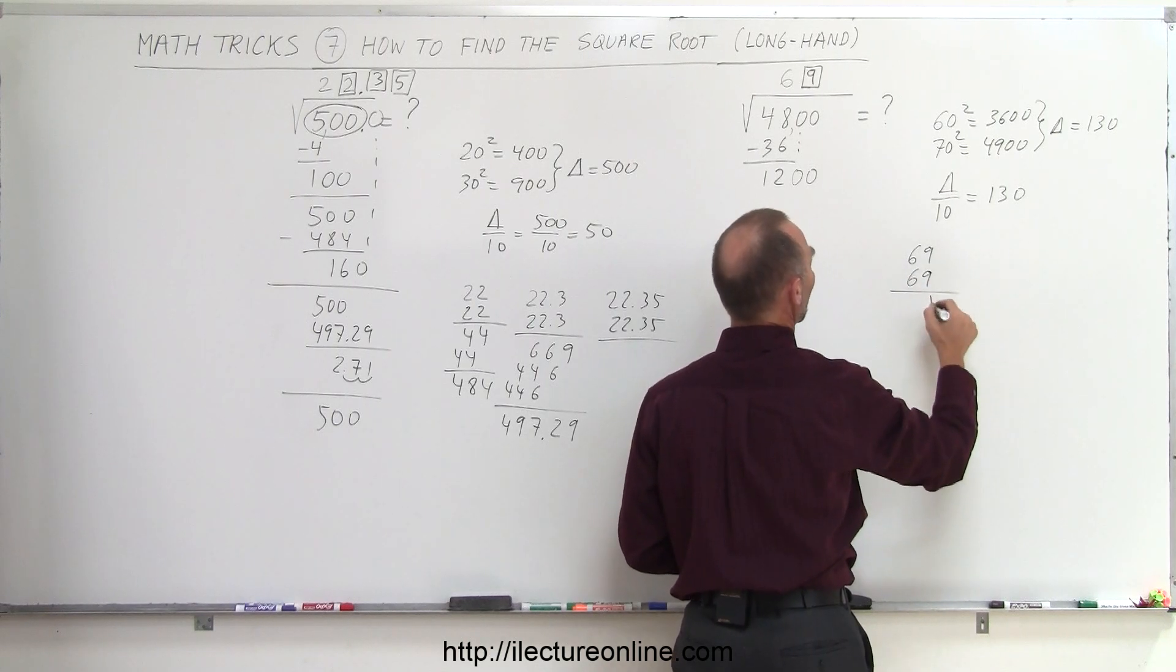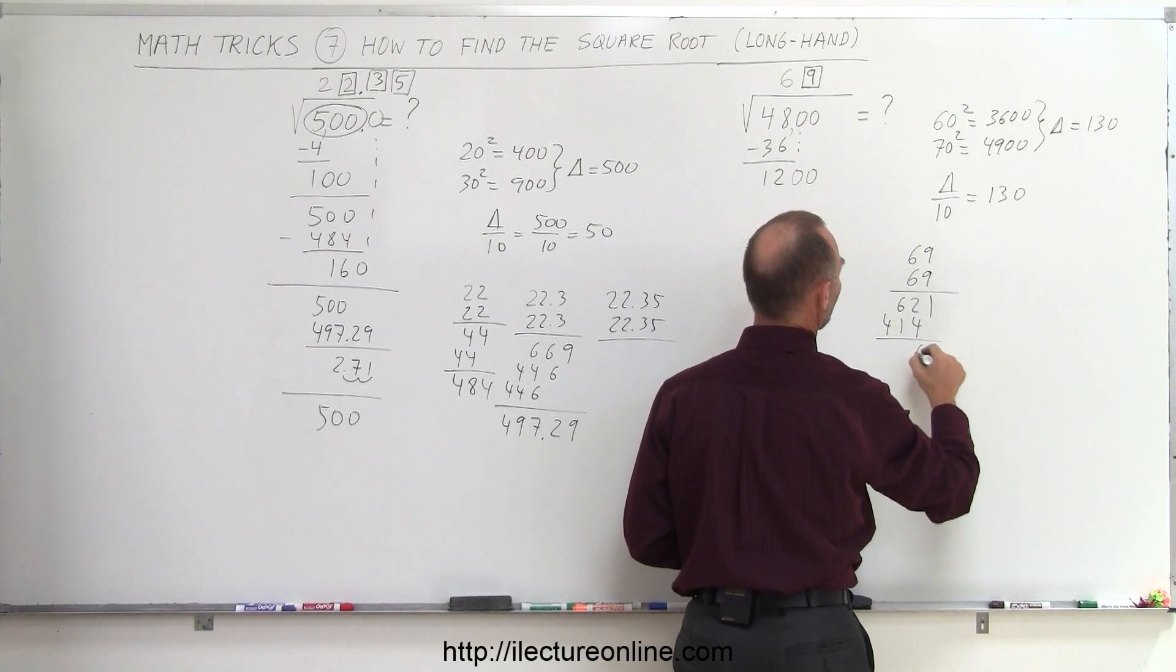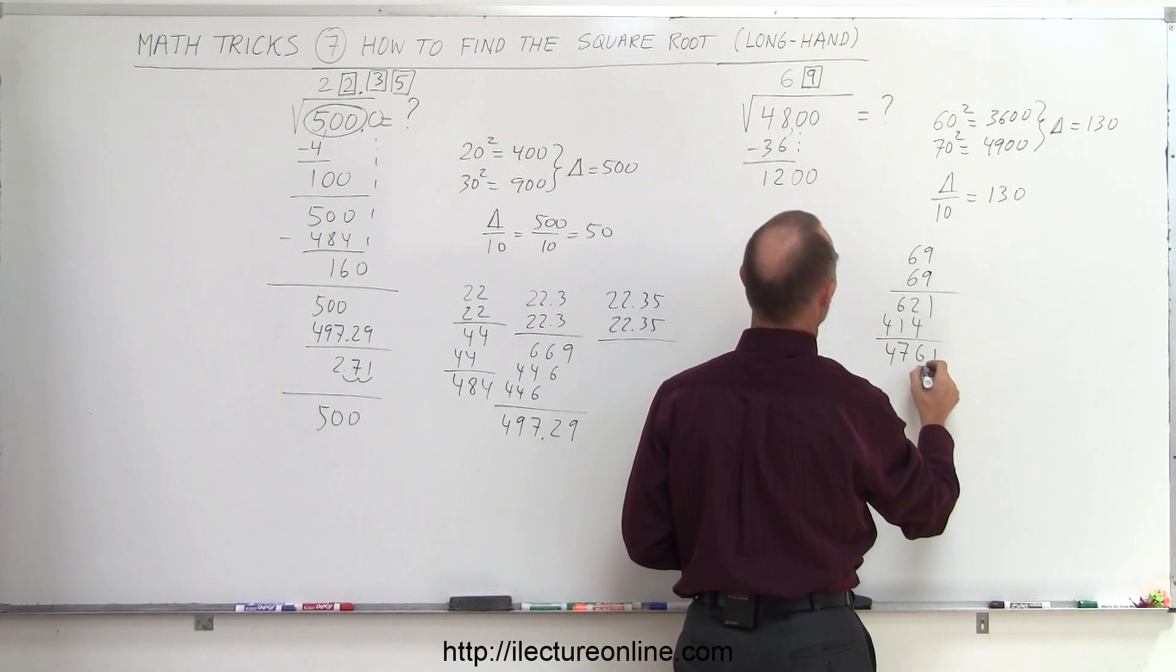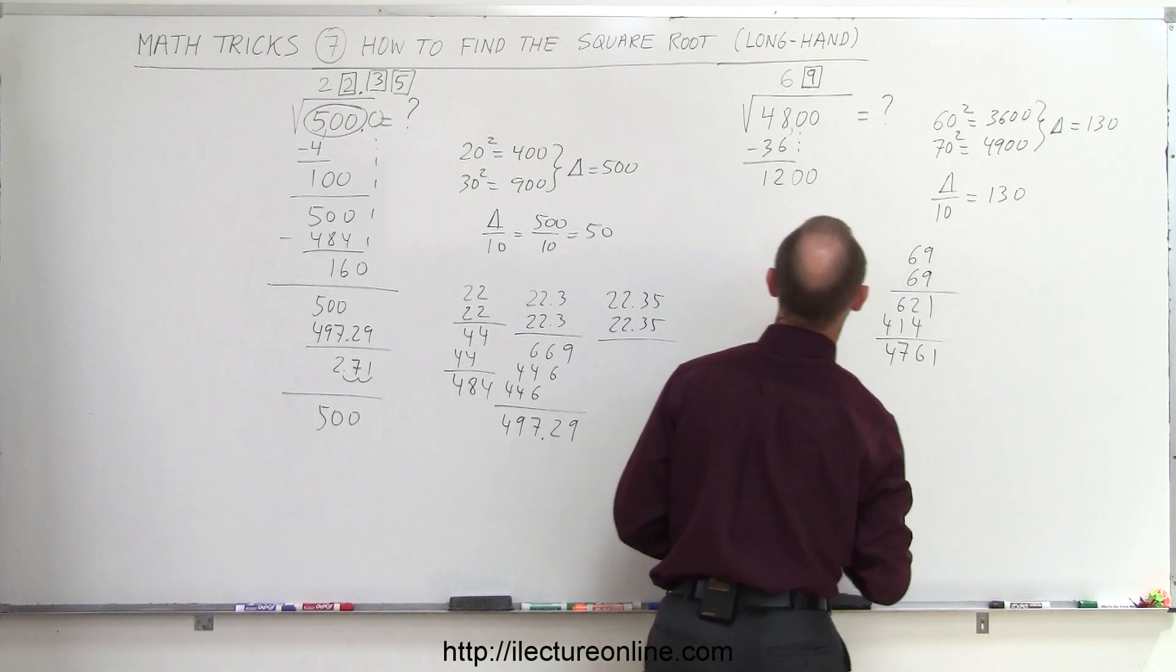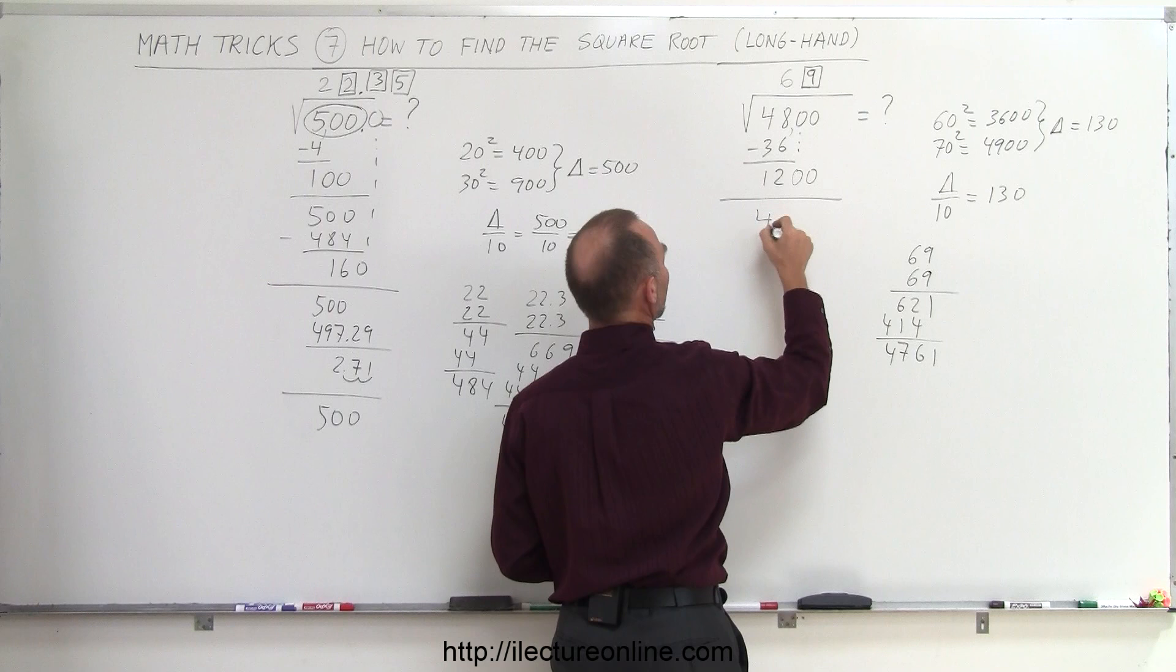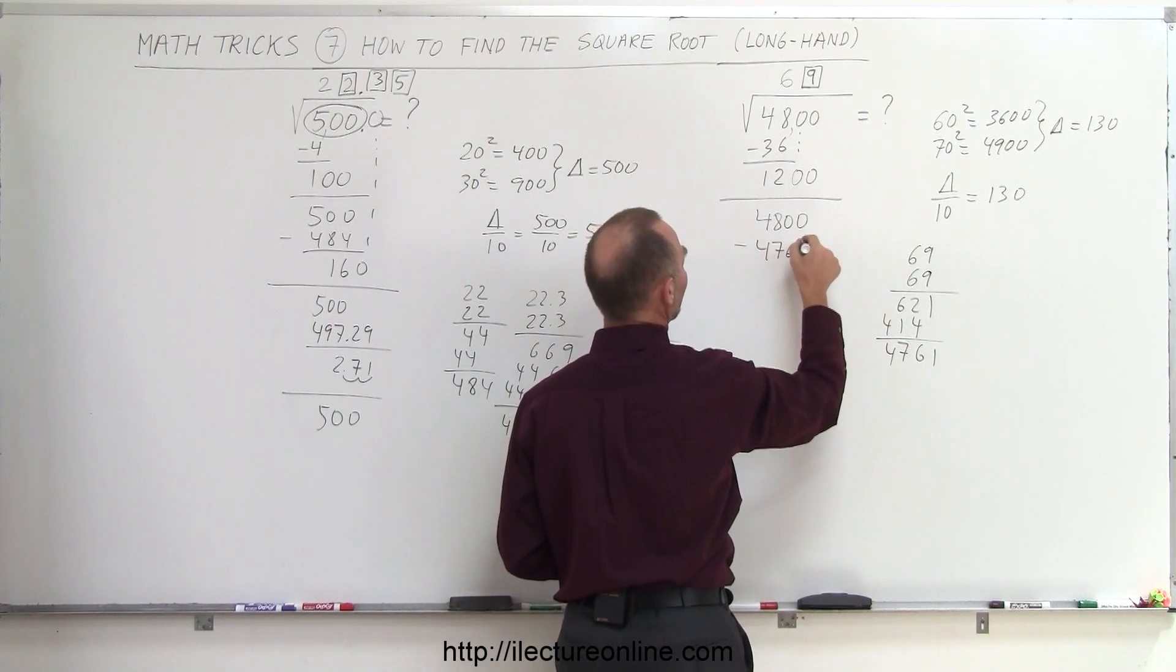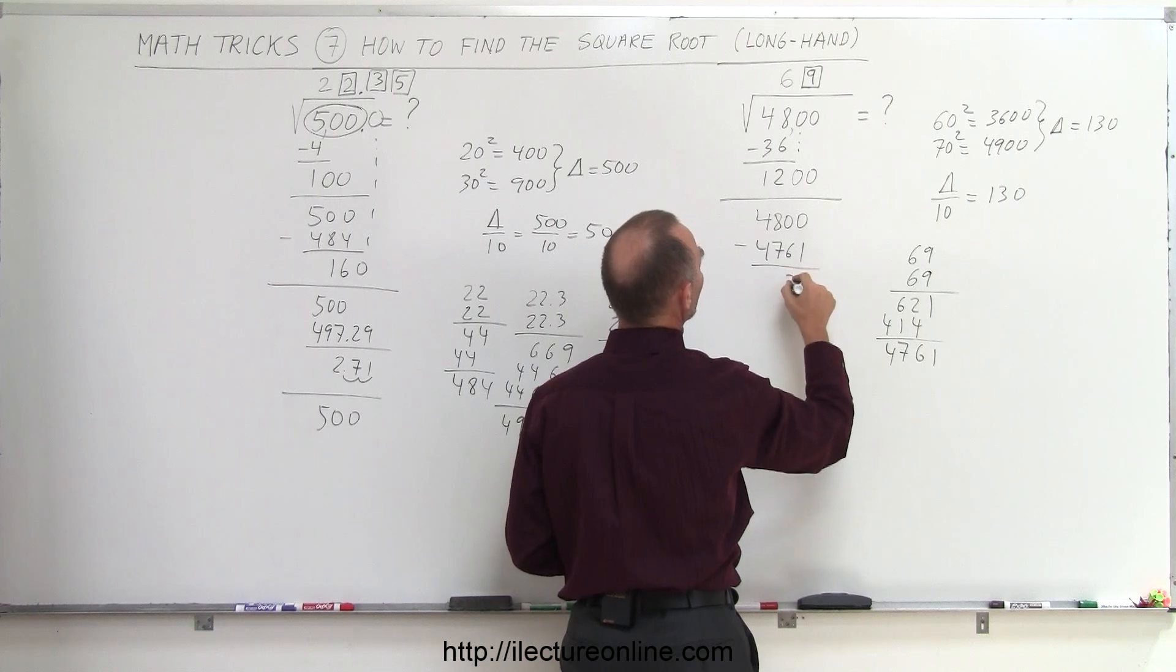What I do now is I take 69 times 69. So 9 times 9 is 81, that's 8. 54 plus 8 is 62, that's 54, 4, 5, 36, 41. Added together I get 1, 6, 7, 4, or 476, or 4761. So then I draw a line here, grab my 4800, subtract from that 4761, the remainder here would be 39.